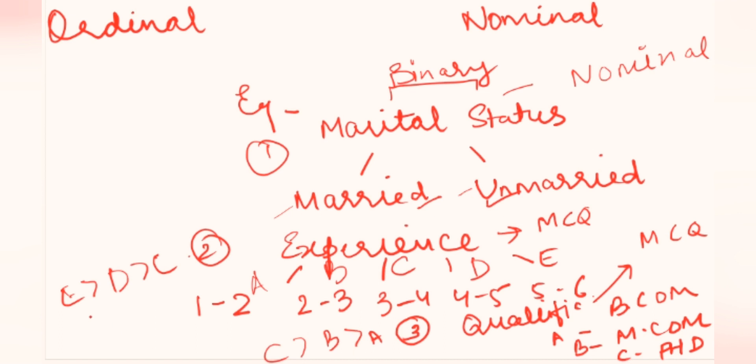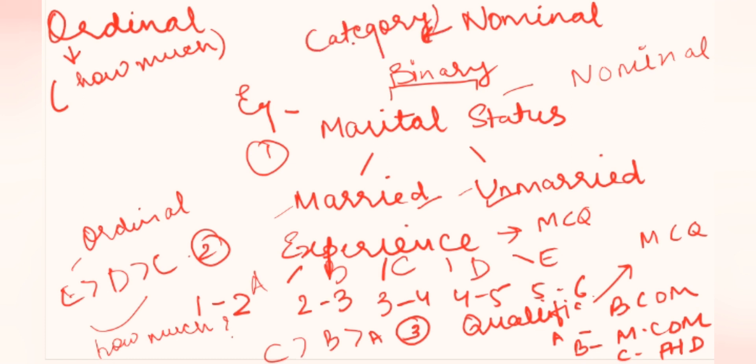Now when the question comes how much, it is ordinal or nominal. So ordinal is how much, nominal is category, binary. Binary means two options. I hope it is very clear what is ordinal and nominal with these examples.